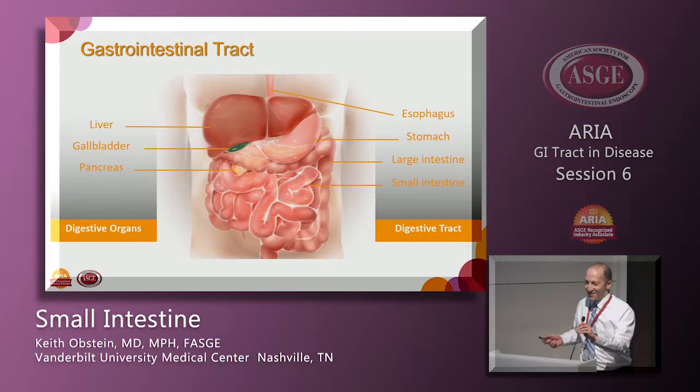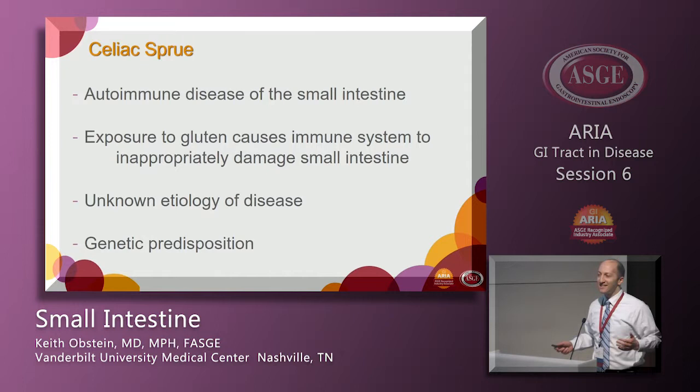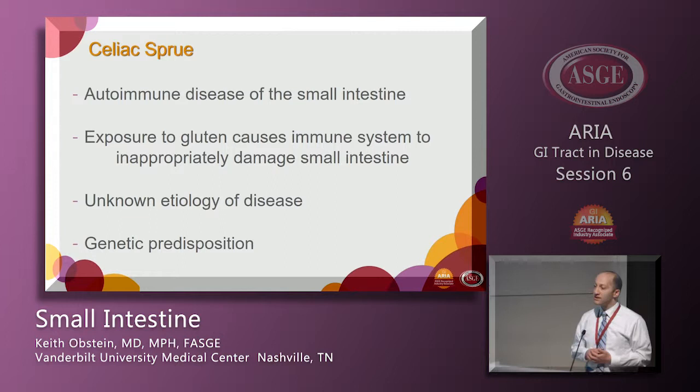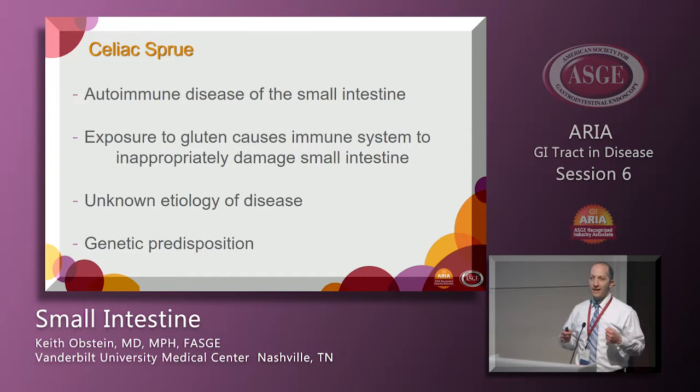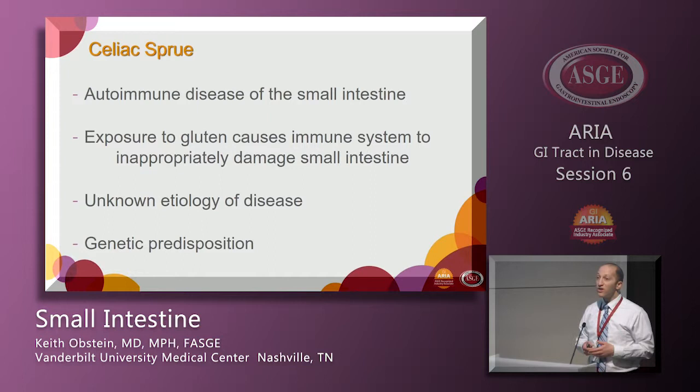This is celiac disease, also called celiac sprue or gluten-sensitive enteropathy. It's an autoimmune disease of the small intestine where the gut inappropriately responds to gluten, triggering inflammation and damage to the small bowel. We don't really know why the disease exists — it's probably a combination of genetics and environmental factors.